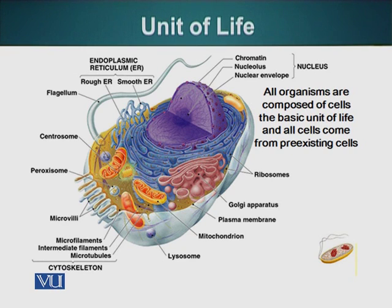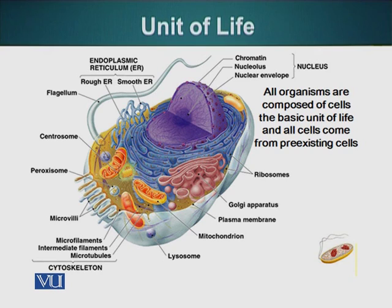There are also structures in the cell that can degrade unwanted material very effectively. These structures are lysosomes. Material that the cell doesn't need or that has been damaged is sent to the lysosome, where it is degraded. Lysosomes are also used to degrade material that the cell ingests — these materials are present in vacuoles, which fuse with the lysosome, allowing lysosomal enzymes to work on and degrade them.